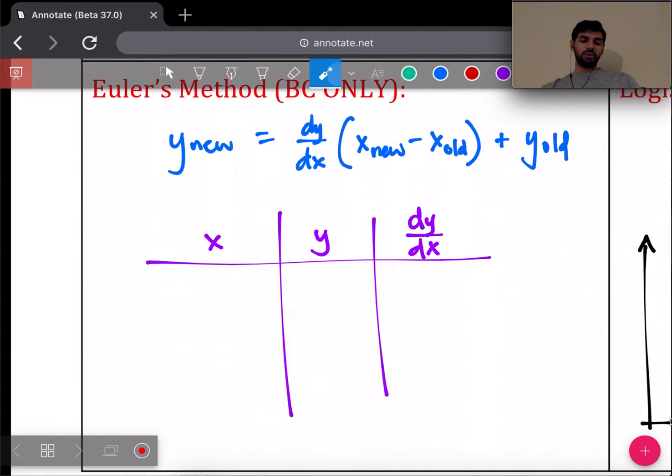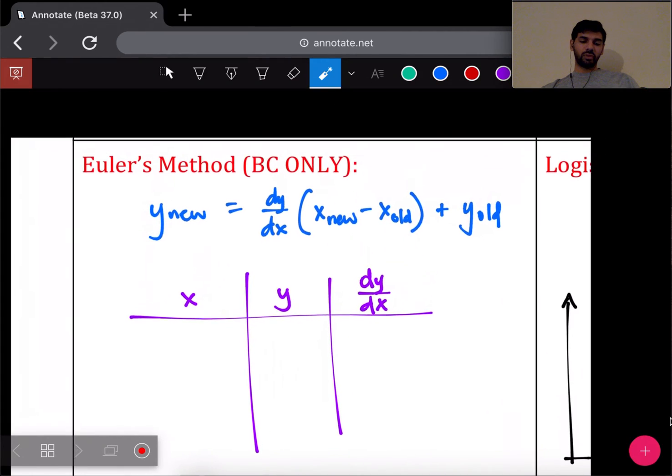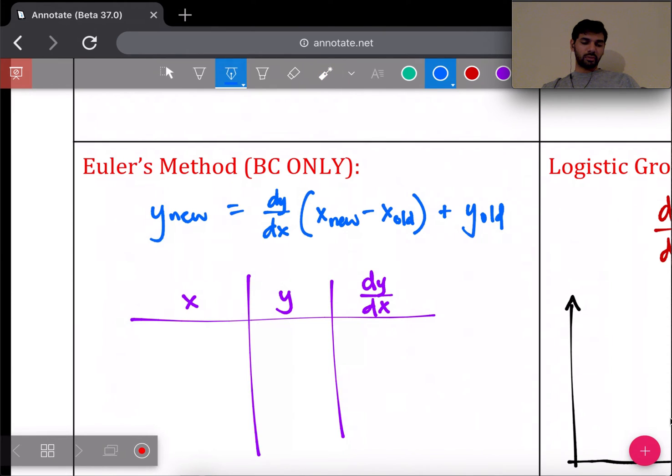The way we use Euler's method is you use the point-slope formula. This comes from y - y₁ = m(x - x₁). m is dy/dx, x - x₁ is x_new - x_old, y is y_new, and y₁ is being added to the other side as y_old. That's where this formula comes from—it all comes from the point-slope formula.